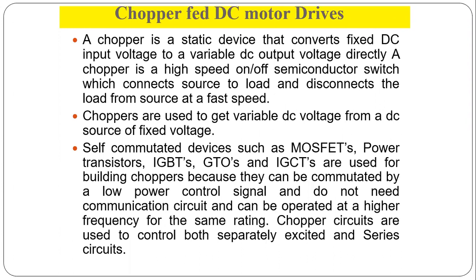The chopper is a static device that converts a fixed DC input voltage to a variable DC output voltage directly. A chopper is a high-speed on-off semiconductor switch which connects the source to the load and disconnects the load from the source at a fast speed. Choppers are used to get a variable DC voltage from a DC source.